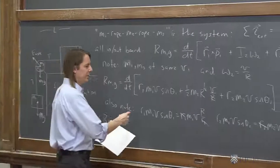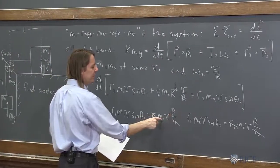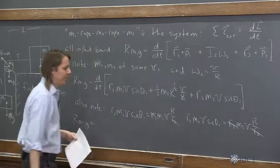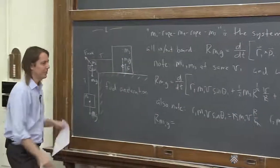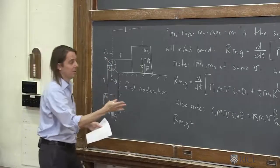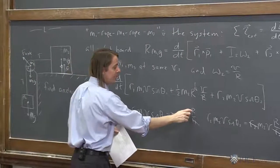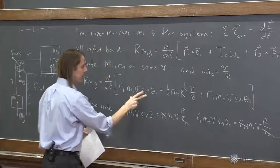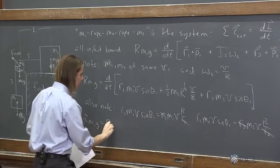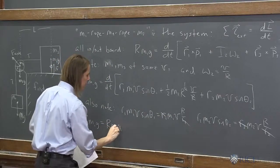Big R is constant. M1 is constant. What's the derivative of the velocity? The acceleration. The whole system is moving at V. Dv dt is A. So this just becomes big R M1 A. This term is R M1 A plus.